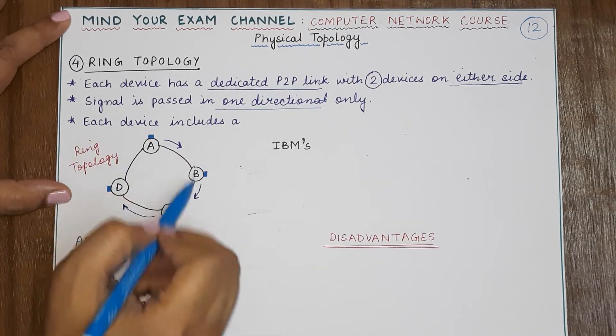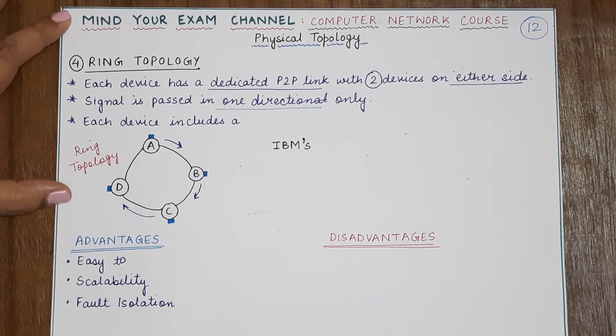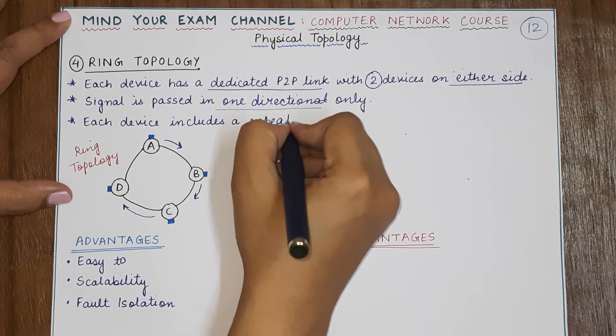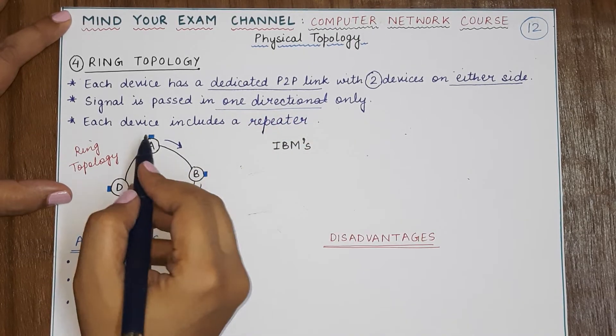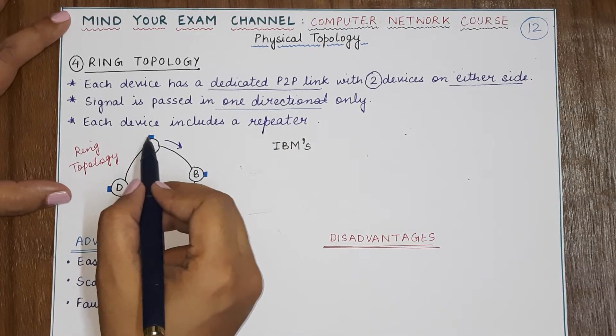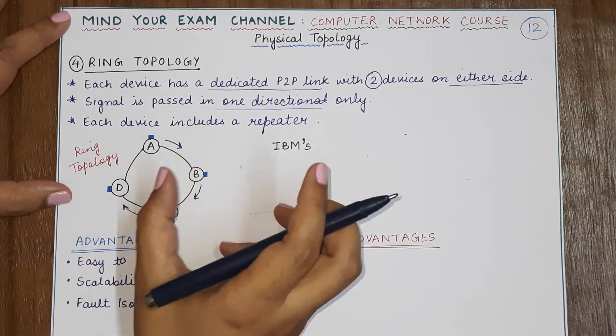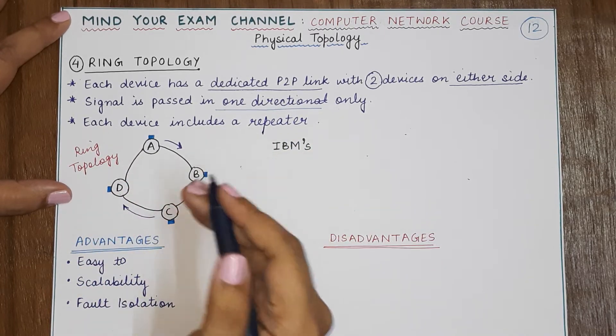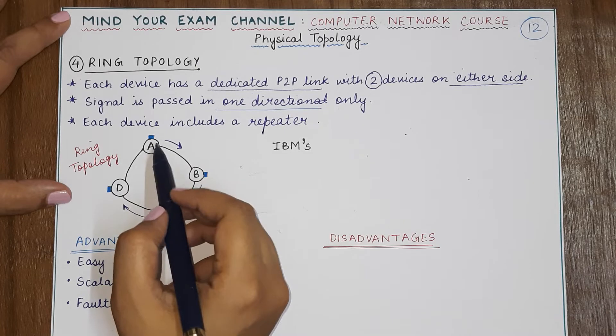Now in ring topology, each device includes a repeater in itself. So as you can see in the diagram also, each device has a blue colored box. This blue colored box is basically the repeater.